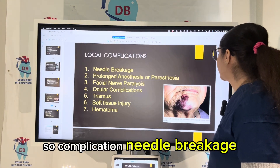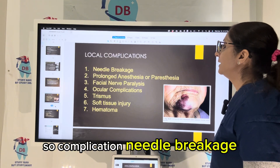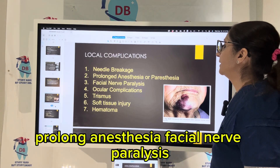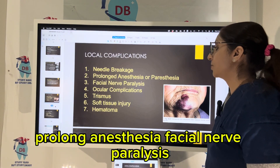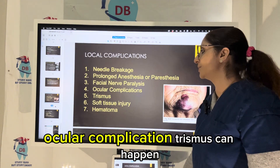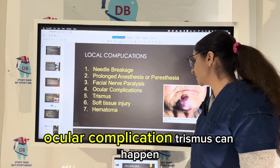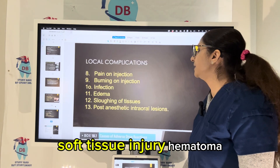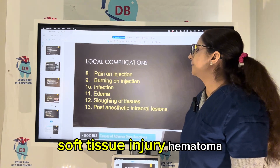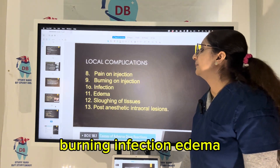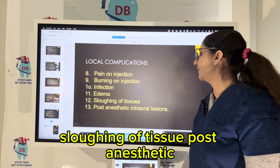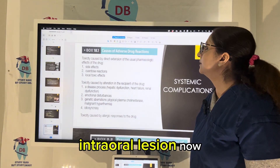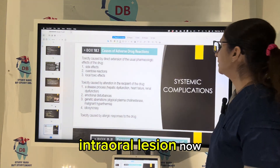Complications of the extra-oral mandibular nerve block include: needle breakage, prolonged anesthesia, facial nerve paralysis, ocular complications, trismus, soft tissue injury, hematoma, burning, infection, edema, sloughing of tissue, post-anesthetic intraoral lesion.